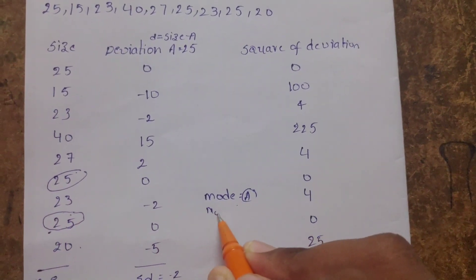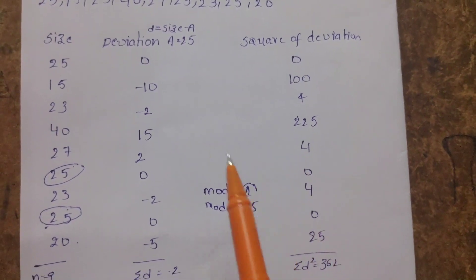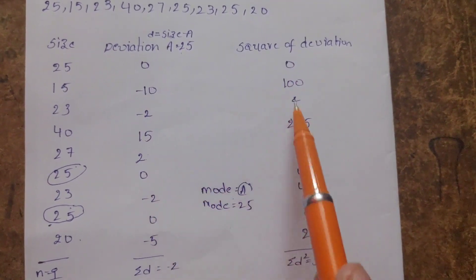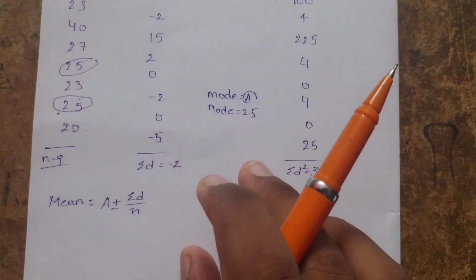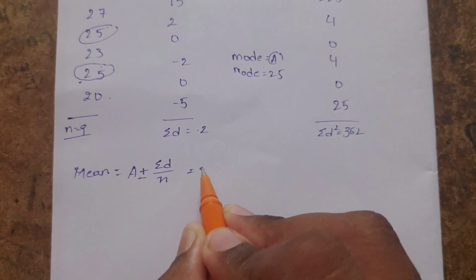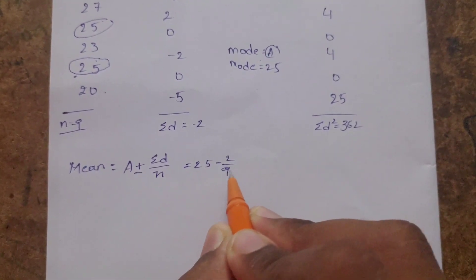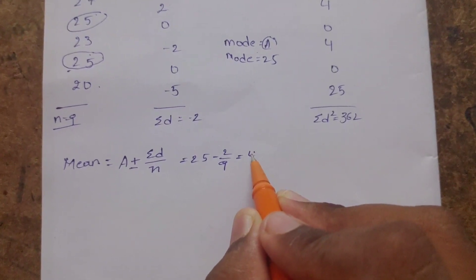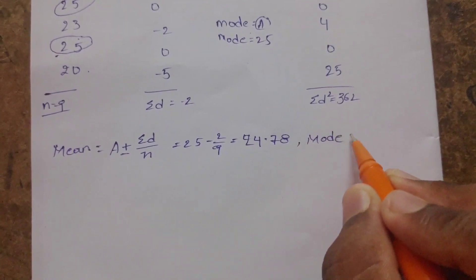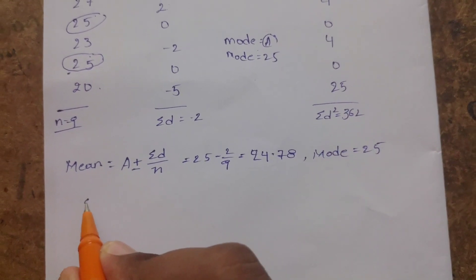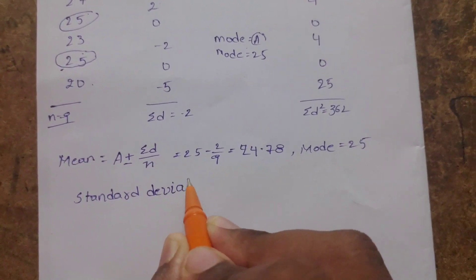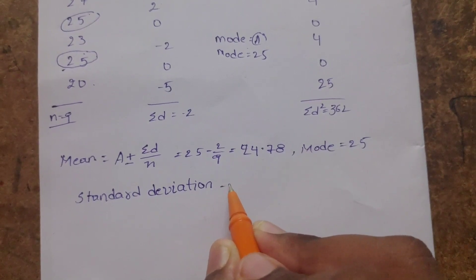This is for grouped data. Since the grouped data contains the most frequently repeated value, that is the mode. So deviation d equals size minus mode. Square of deviation is size minus mode squared. Mean equals a plus or minus sigma d by n, which equals 25 minus 2 by 9, equals 24.78. So mean is 24.78 and mode is 25. We need to calculate standard deviation.